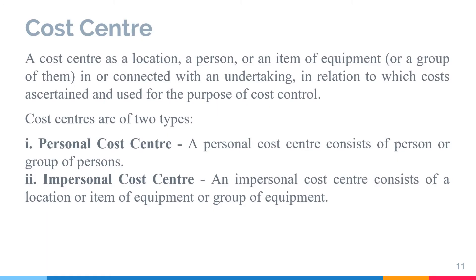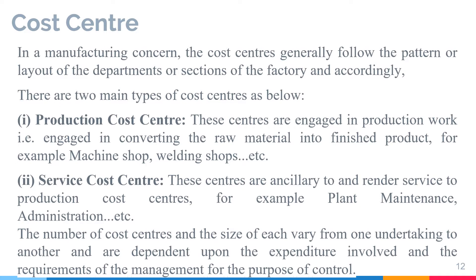Then we have cost center, which means a location, person, or equipment for which we ascertain cost so that we can control cost. Cost centers are of two types: personal — consisting of a person or group of persons — and impersonal — where we determine cost of equipment, machinery or location. In manufacturing concerns, there are two types of cost centers: production cost centers, where raw materials are processed and converted into finished products (e.g., machine shop, welding shop), and service cost centers, which are ancillary to production centers (e.g., maintenance, administration). The number and size of these centers may vary from factory to factory.